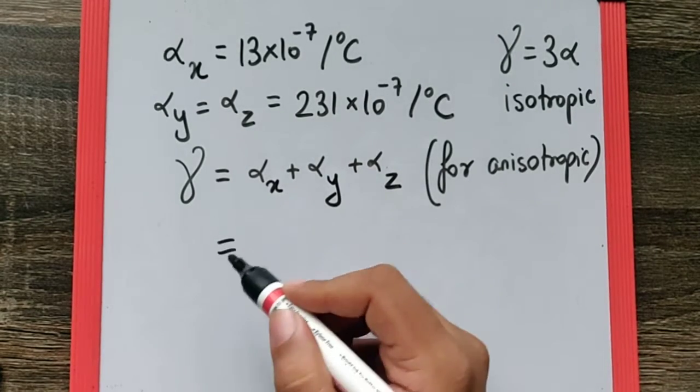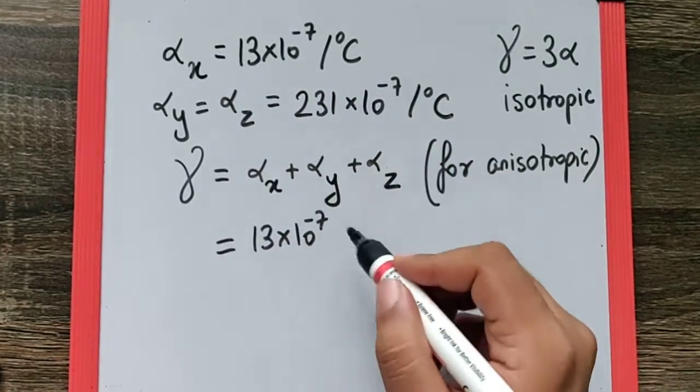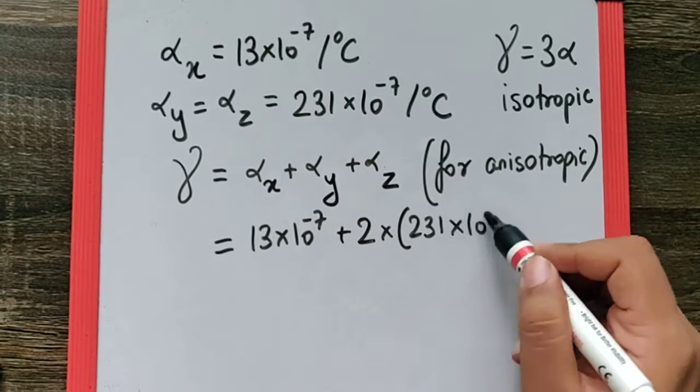So I can substitute the values: α_x is 13×10⁻⁷, and α_y and α_z are the same, so it's 2 times 231×10⁻⁷.